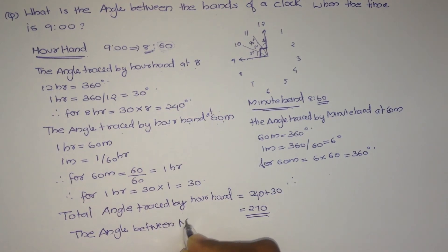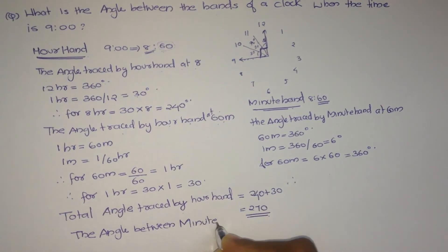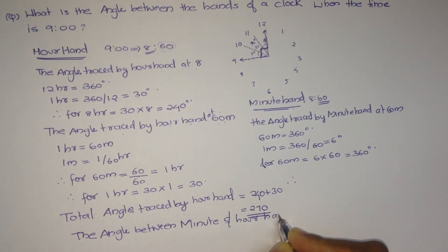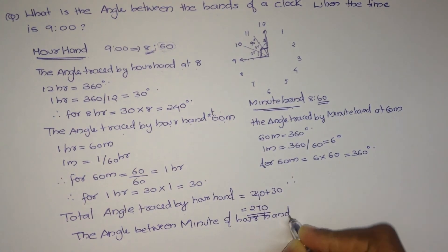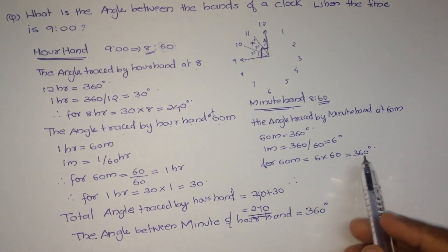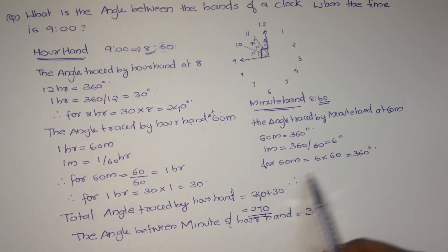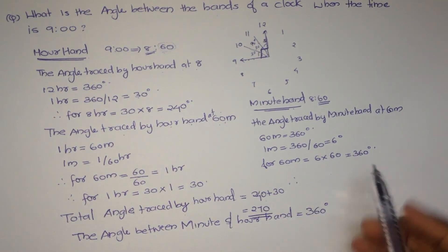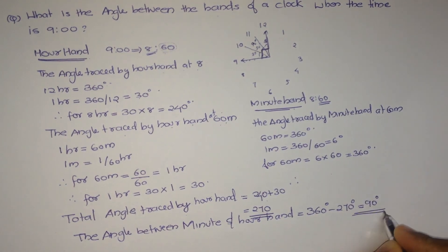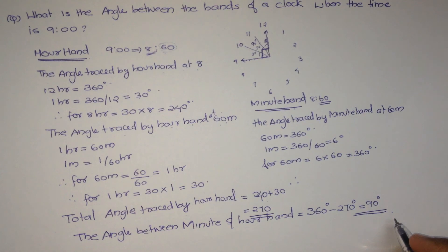Therefore, the angle between the minute hand and hour hand equals the difference — that is, 360 minus 270, which is equal to 90 degrees. Thank you for watching. If you have any doubt, please comment.